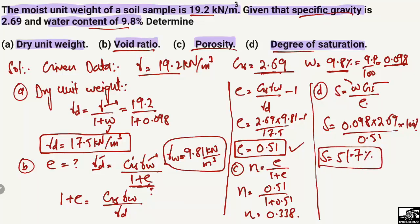So the degree of saturation for this soil sample is 51.7 percent, given water content 9.8 percent, specific gravity 2.69, and moist unit weight 19.2 kilonewton per cubic meter. Hope you guys understand how to find out the different terms for this soil sample. Don't forget to subscribe to our channel for civil engineering videos. Thank you for watching.